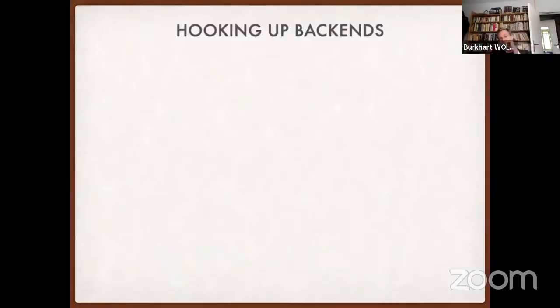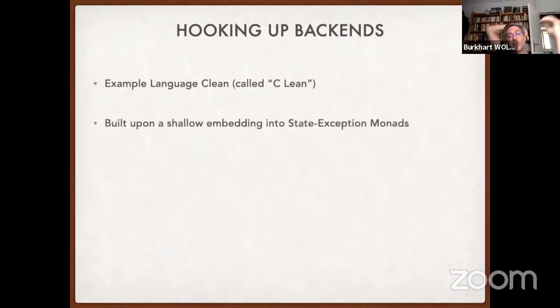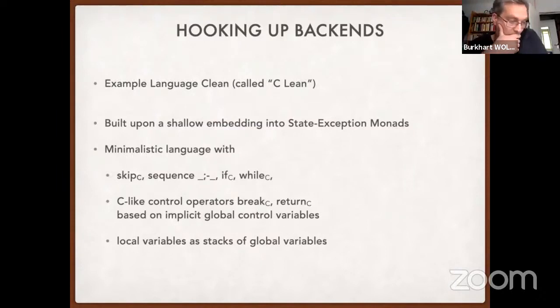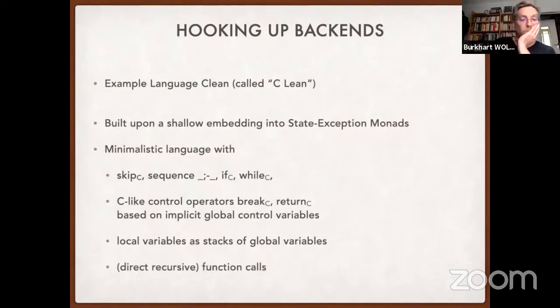I present an example language which we call C-lean. It's built on a shallow embedding into state exception monads. It's a minimalistic language with skip, sequence, if, and while - similar to IMP - but it offers C-like operation control operators for breaks and return based on an implicit global control variable. Local variables are possible, and procedures are represented as stacks of global variables. The entire construction is consistent with the possibility to have direct recursion calls in C-lean.